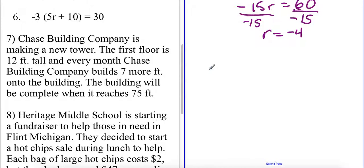Now in order to create an equation based off of this what I'll need to do is I'll need to think well how often is the rate of change happening. I know that it's every month and that's 7 more feet. So I'm going to say that 7m plus that 12 feet from the first floor is going to equal 75.